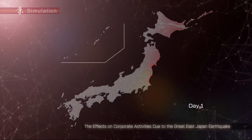Associate Professor Hiroyasu Inoue of the University of Hyogo has utilized existing data from approximately 1 million companies and their 5 million transactions to simulate how the effects of the Great East Japan Earthquake spread through corporate activities.